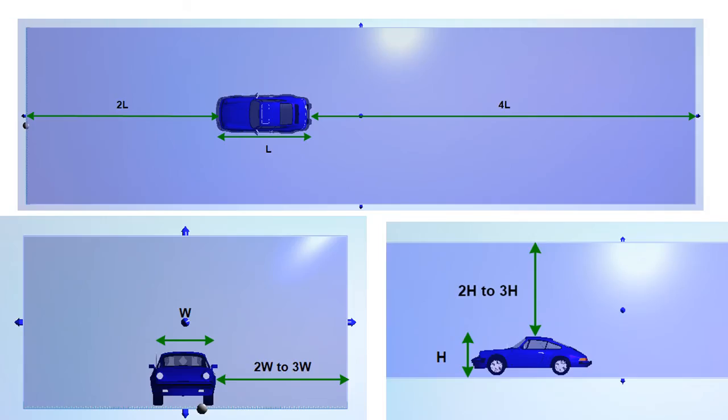Let's begin with the wind tunnel size. For accurate flow results, the wind tunnel should extend about 2 times upstream and 4 times downstream the length of the model. Around the model, the distance should be 2 to 3 times the size of the model in each direction. If the model is physically on the ground, then the wind tunnel should be flush or slightly below the model.